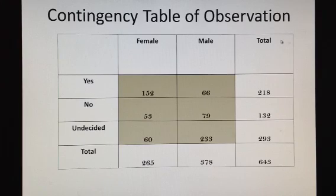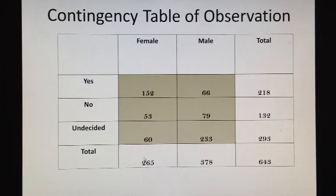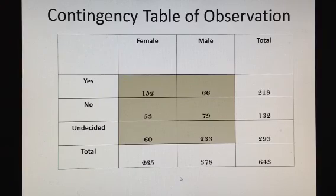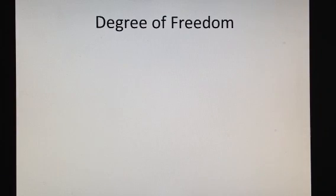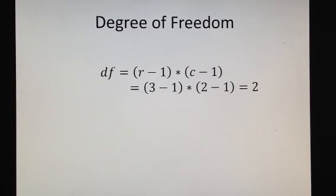In the right column we will have the total number of yes answers and total number of no answers. In the bottom row we will have the total number of female and male, and the total number of individuals will be 643. The degree of freedom, given the rows and columns of our categorical data, is rows minus 1 times columns minus 1 — in this case it would be 2.